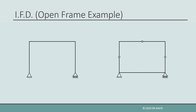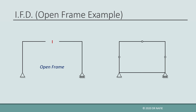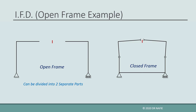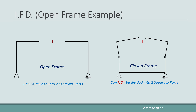First, what is an open frame? If an open frame is cut at any point, the frame is divided into two separate parts, and thus we can easily evaluate the internal forces at that point. In contrast, if we cut a closed frame at a point, the frame cannot be divided into two separate parts, and we are unable to evaluate the internal forces. We will show how to solve a closed frame example in another lecture.